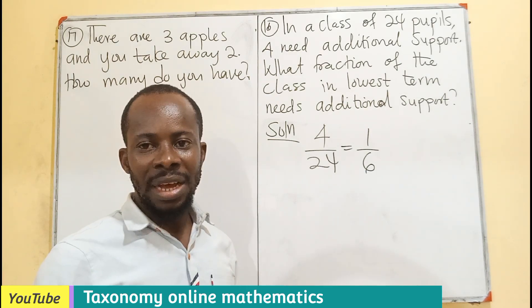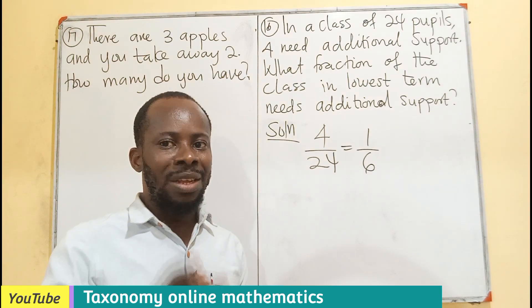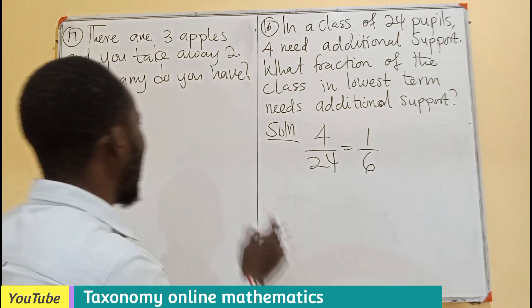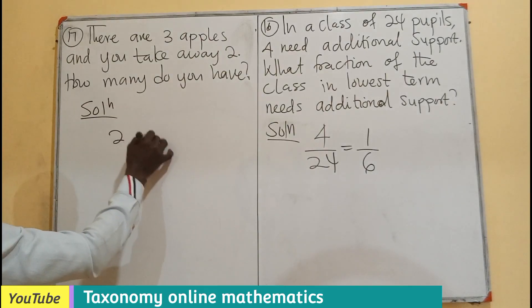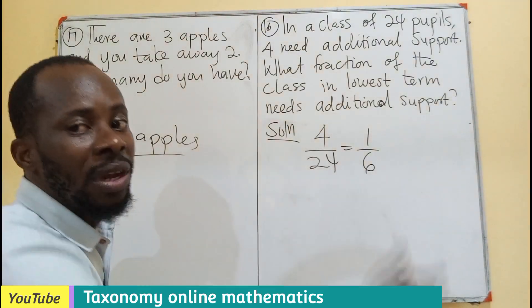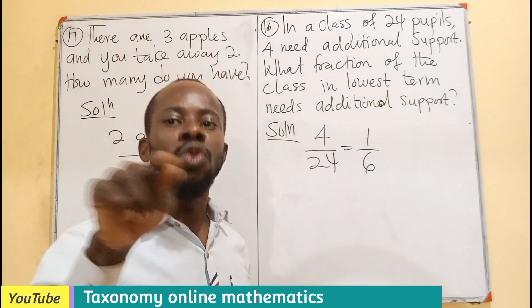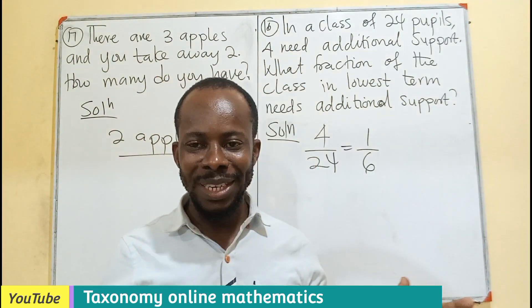When you take that 2 away, how many are you having? I am sure you are trying to look at your hand. You are having 2 apples. So the answer is just 2 apples. You are having 2 apples, and 1 apple is left there. But what you are interested in, what you are having in your hand, is 2 apples.